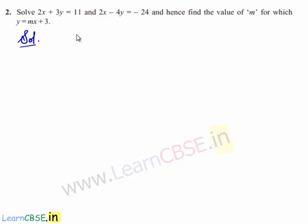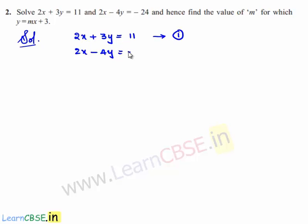Let us write down the given equations as 2x plus 3y is equal to 11, which is equation number 1, and 2x minus 4y is equal to minus 24, which is equation number 2.